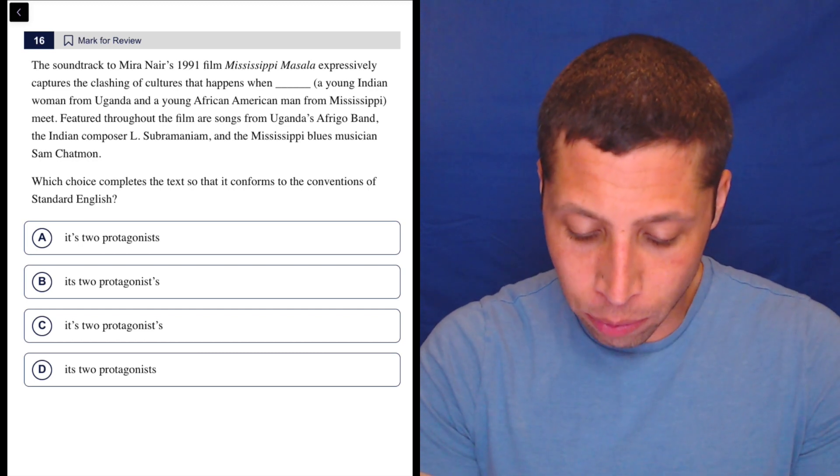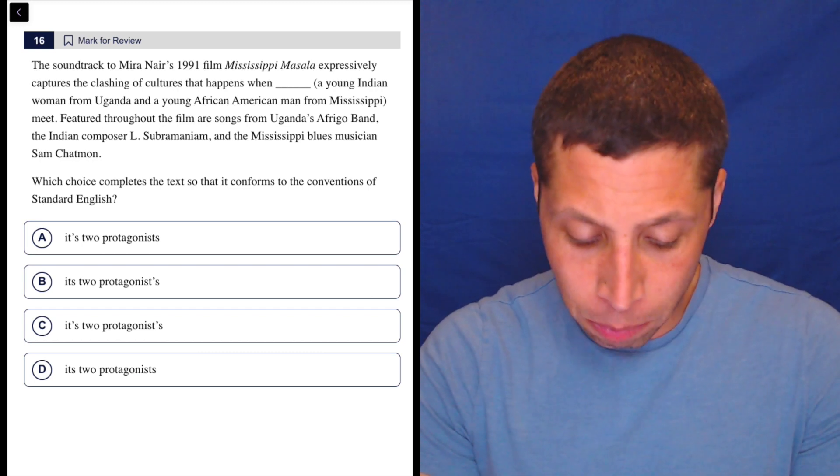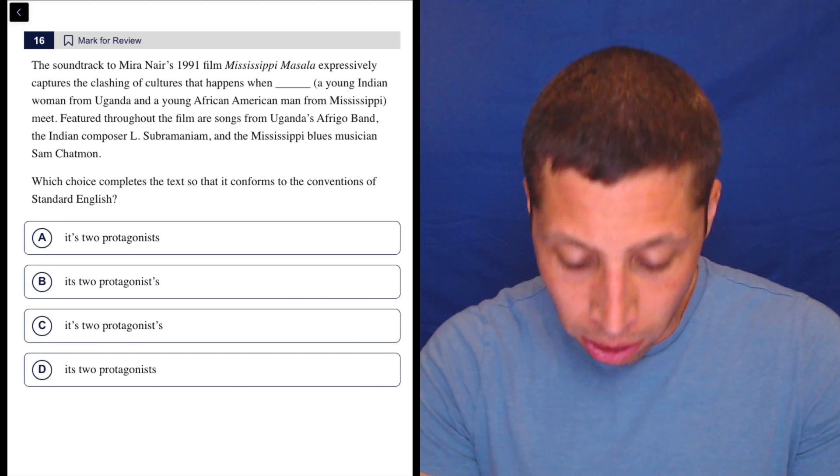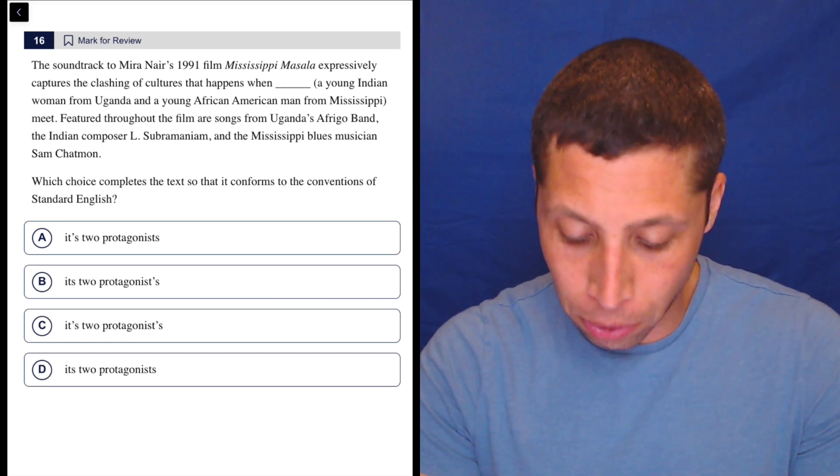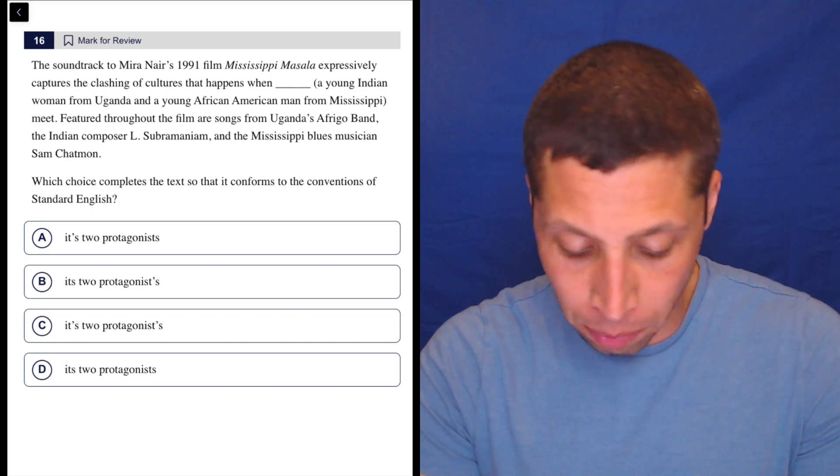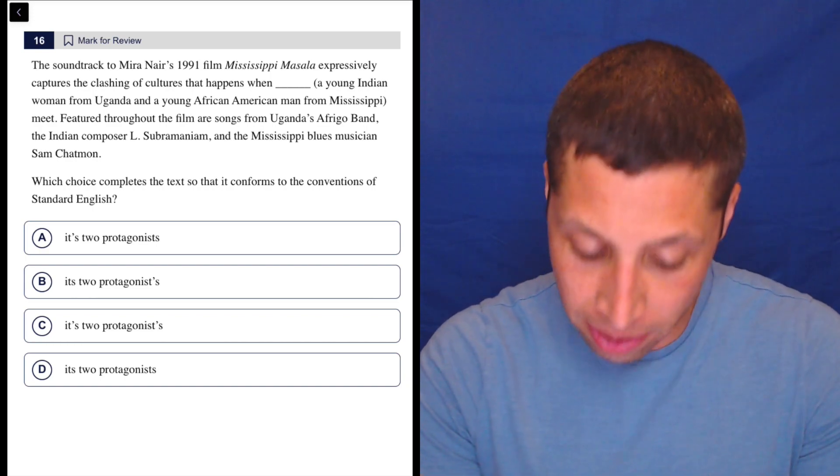The soundtrack to Mira Nair's 1991 film, Mississippi Masala, expressively captures the clashing of cultures that happens when its two protagonists, a young woman from Uganda and a young African American man from Mississippi, meet.